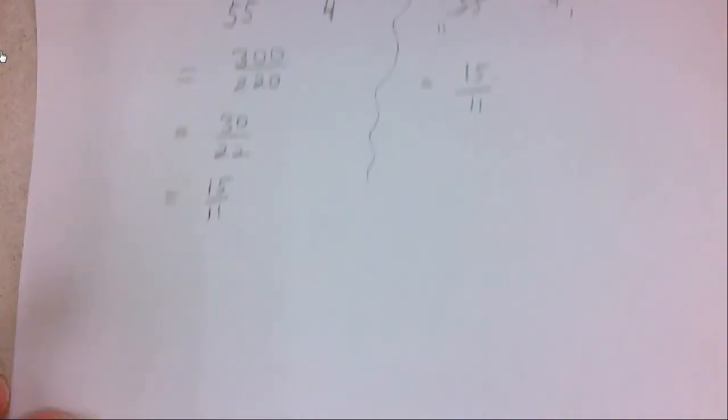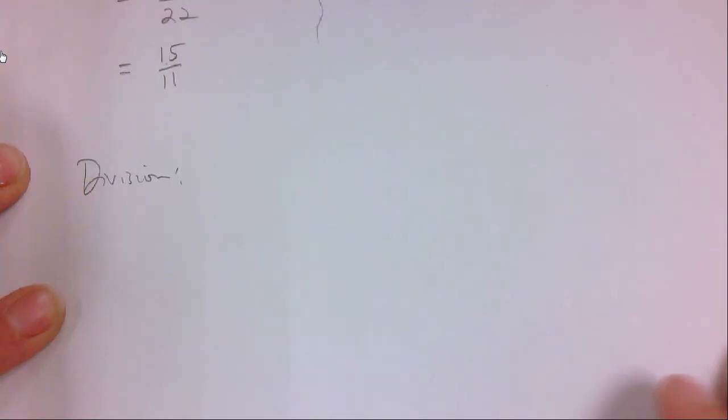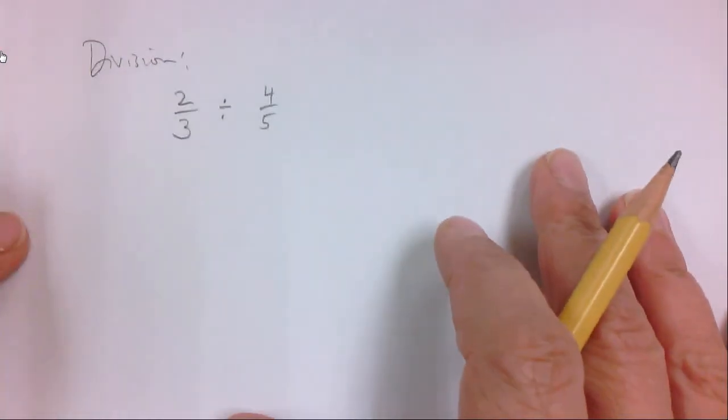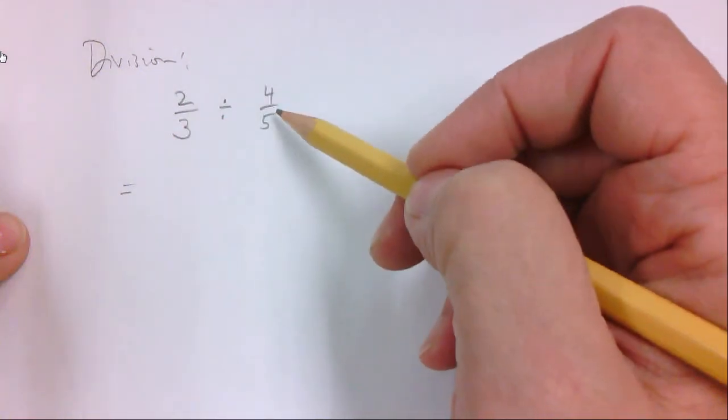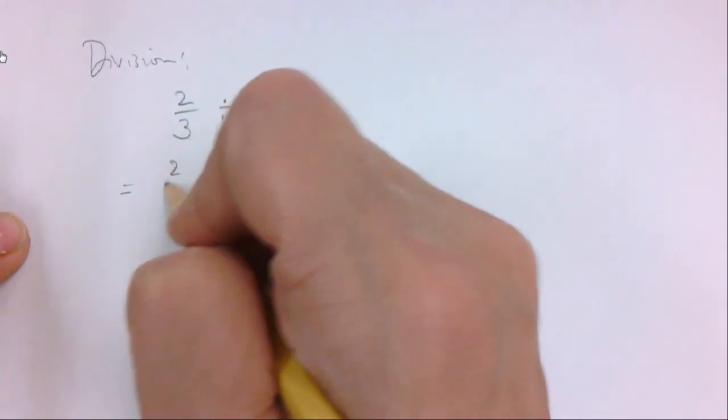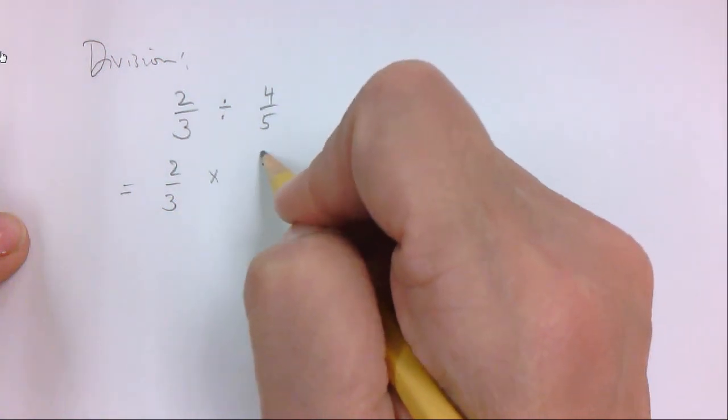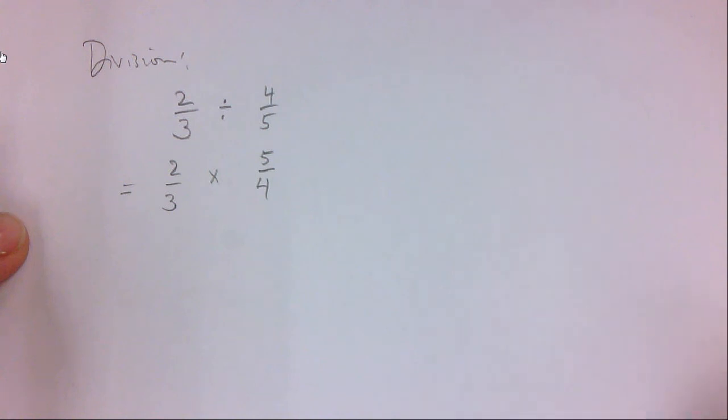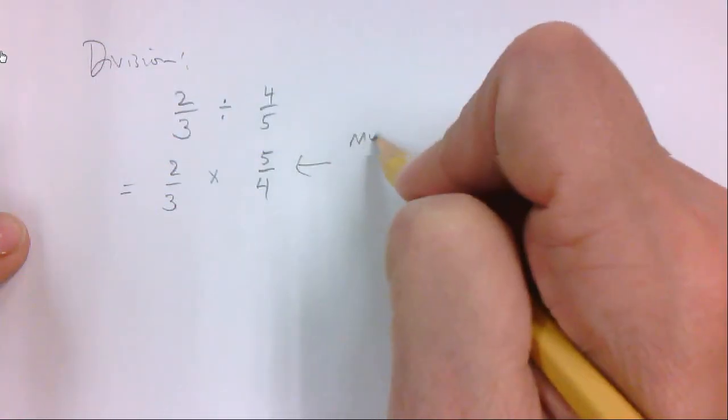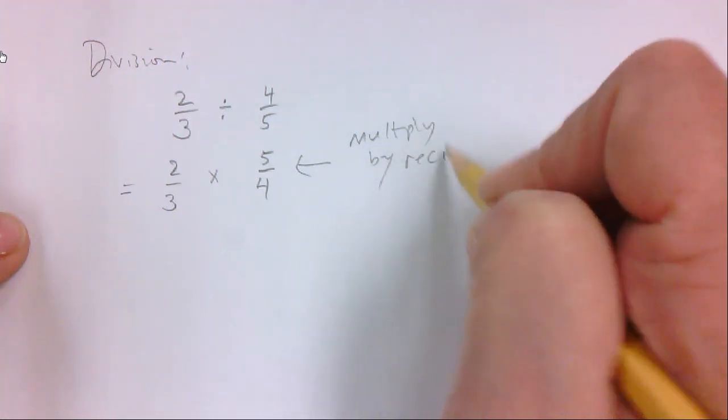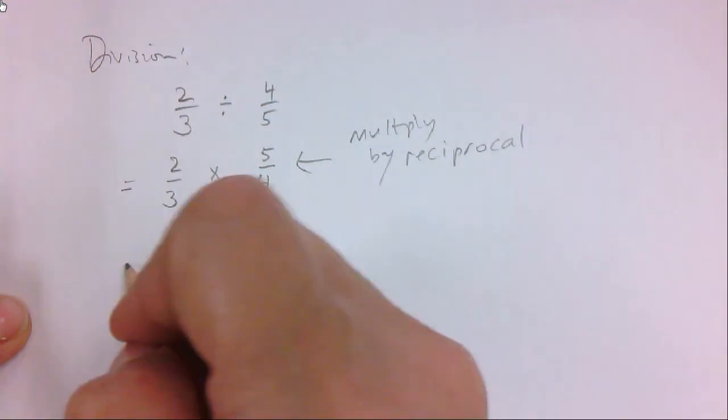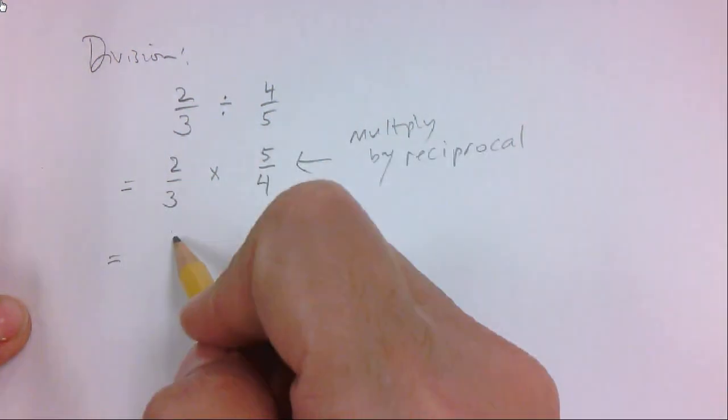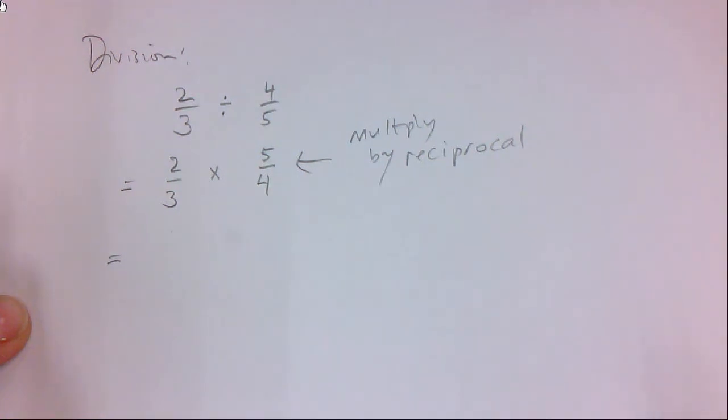So that's multiplication. The last thing is division. Division is very similar to multiplication. I'll use the same numbers as before. I'll do 2 thirds divided by 4 over 5. And what happens with division is division is the same thing as multiplying by what we call the reciprocal of 4 over 5. So you keep the first number the same, and you multiply by the reciprocal. The reciprocal is the same fraction, but flipped numerator and denominator. So I'm going to write here, multiply by the reciprocal. Know this word, because we're going to use it a lot. Once you have the reciprocal, you can multiply straight across, because it's just multiplication.